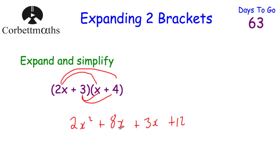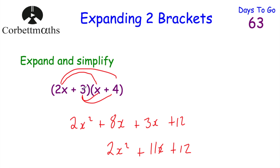We can simplify this: 8x and 3x added together is 11x. So the answer is 2x squared plus 11x plus 12.